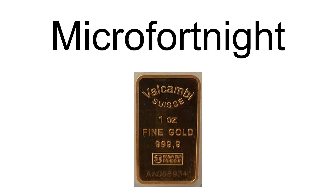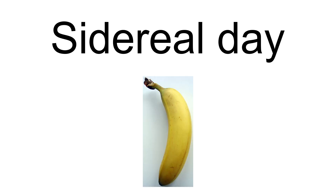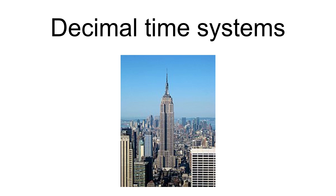One unit derived from the FFF system of units is the microfortnight, one millionth of the fundamental time unit of FFF, which equals 1.2096 seconds. This is a fairly representative example of hacker humor, and is occasionally used in operating systems; for example, the OpenVMS TIMEPROMPT_WAIT parameter is measured in microfortnights. The sidereal day is based on the Earth's rotation rate relative to fixed stars, rather than the Sun; a sidereal day is approximately 23 hours, 56 minutes, 4.0905 SI seconds. The measurement of time is unique in SI in that while the second is the base unit, measurements larger than a second instead use traditional divisions including the sexagesimal-based minute and hour as well as the less regular day and year units. SI allows for the use of larger prefixed units based on the second, a system known as metric time, but this is unusual.